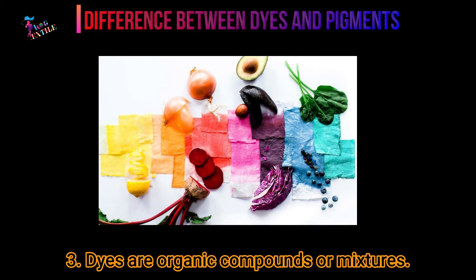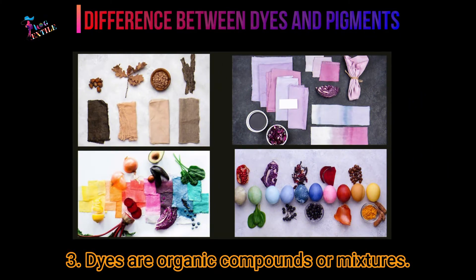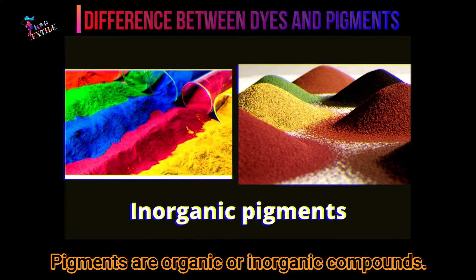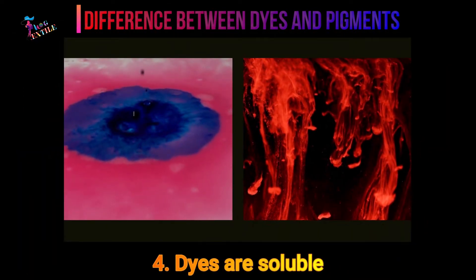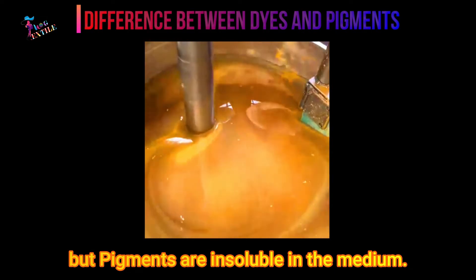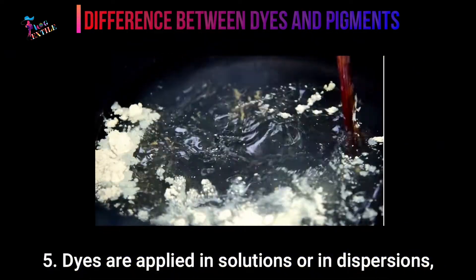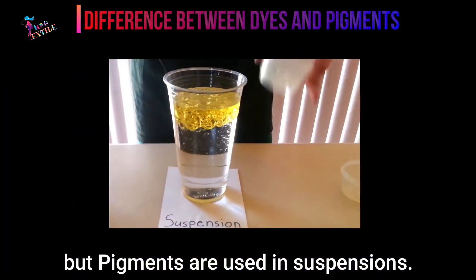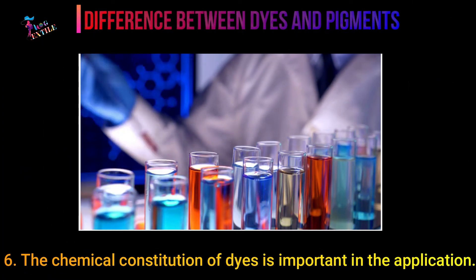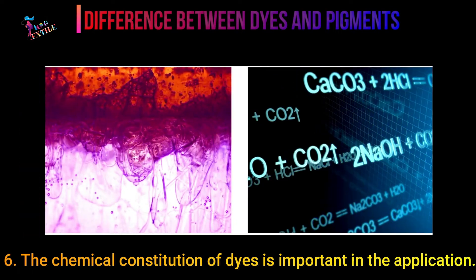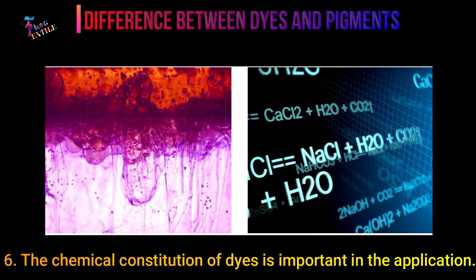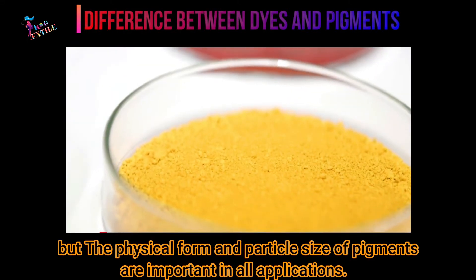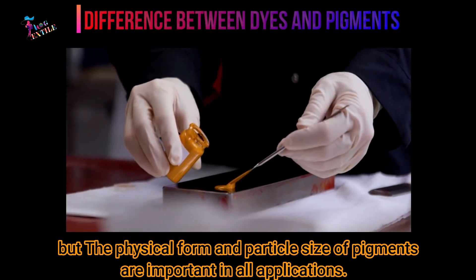3. Dyes are organic compounds or mixtures, while pigments are organic or inorganic compounds. 4. Dyes are soluble, but pigments are insoluble in the medium. 5. Dyes are applied in solutions or in dispersions, but pigments are used in suspensions. 6. The chemical constitution of dyes is important in the application, but the physical form and particle size of pigments are important in all applications.